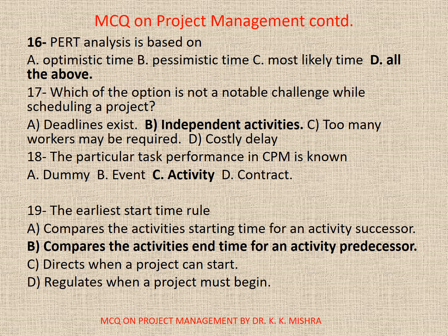Question 16 is a repeated question about PERT analysis — optimistic time, pessimistic time, or most likely time — so obviously all three, and the correct option is all the above. Question 17: Which of the options is NOT a notable challenge while scheduling a project? Options: A. Deadlines exist; B. Independent activities; C. Too many workers may be required; D. Costly delay. Correct option is B: Independent activities.